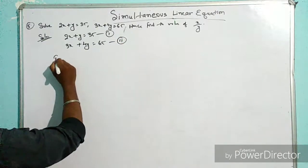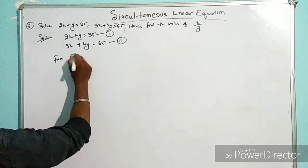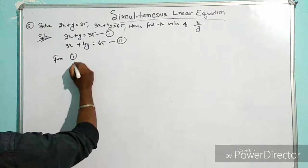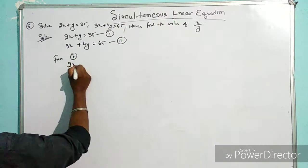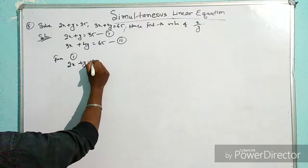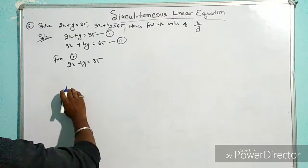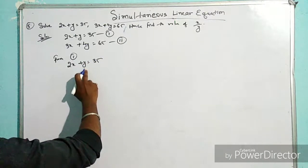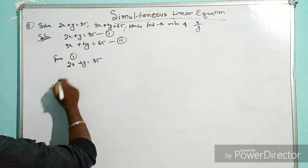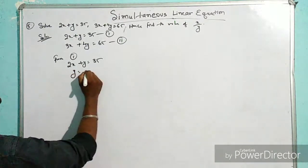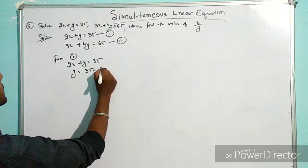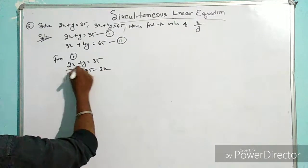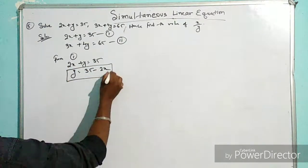From equation 1, we'll take the temporary value of y. We have 2x + y = 35, so y = 35 - 2x. This is my temporary value.